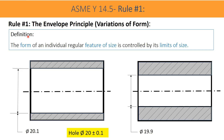Definition of Rule 1: The form of an individual regular feature of size is controlled by its limits of size. In this figure, a hole size of 20 is shown and its tolerance of size is plus or minus 0.1. With these tolerances we can define the limit of size as 19.9 and 20.1. The upper size limit is shown in the first figure, and the lower size limit of 19.9 is shown in the second figure. This feature is a hole inside a cylinder.